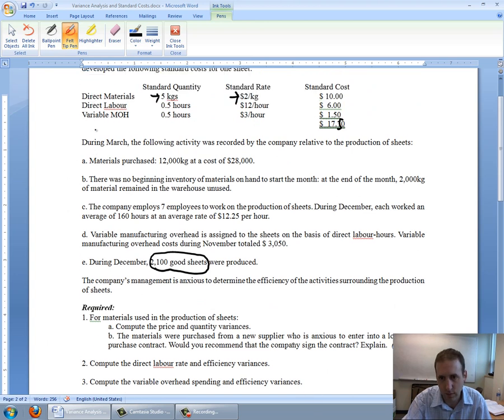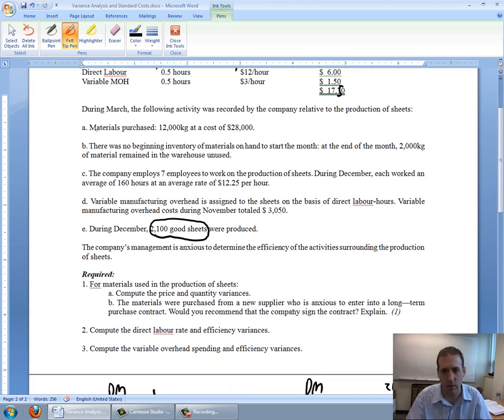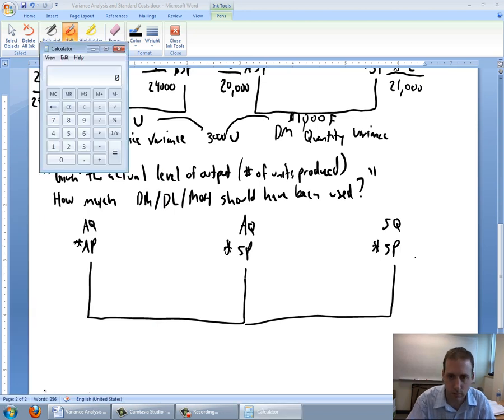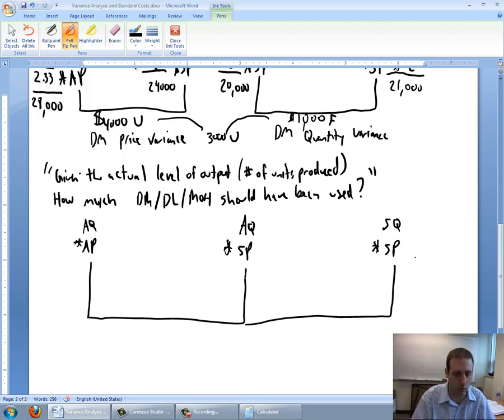Let's work through it and figure out the actual quantity of labor that we use, the actual number of hours of labor. Part C is all about labor. It says the company employs seven employees to work on the production of sheets. During December, each worked an average of 160 hours at an average rate of $12.25 an hour. So we had seven employees who worked 160 hours. The actual quantity of labor is seven times 160, which is 1,120 hours worked by my employees. Let's fill that in as my actual quantity, 1,120 hours. My actual price that I paid them was $12.25 an hour.